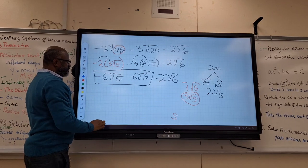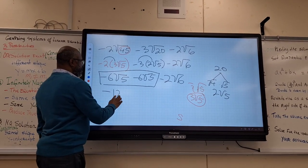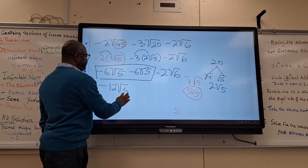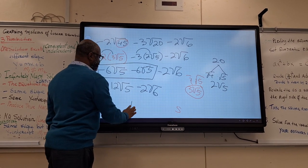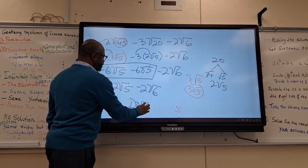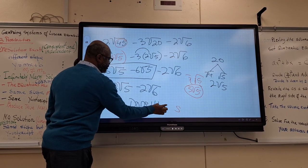This will give you what? Negative 12 root 5, minus 2 root 6. We got it. And done.